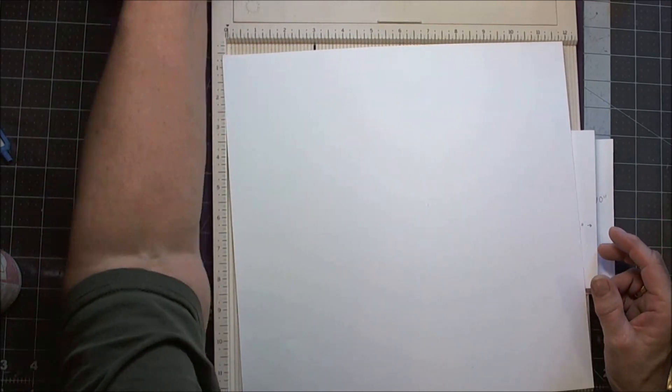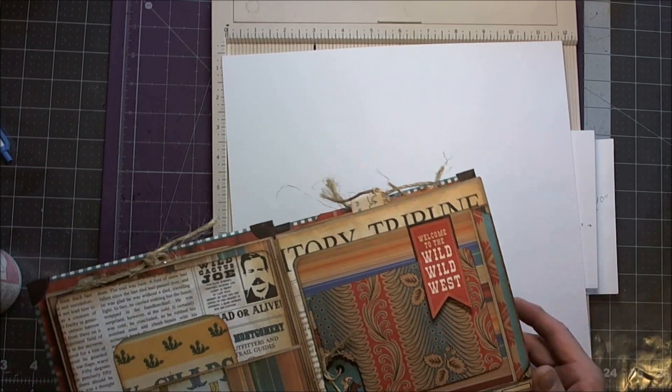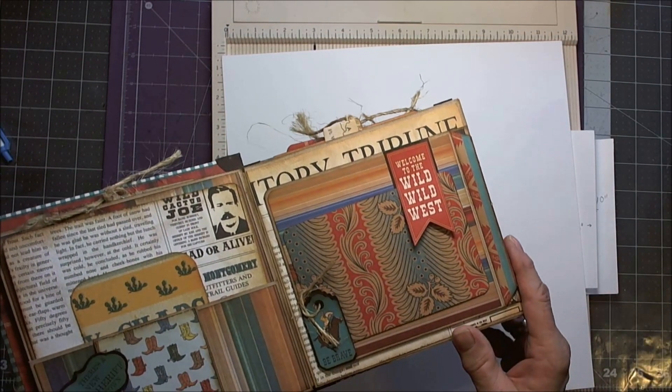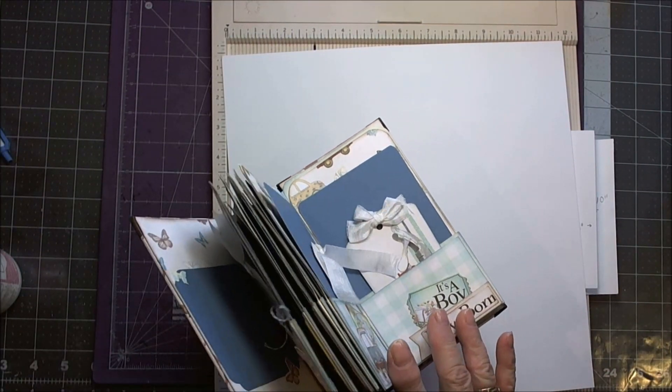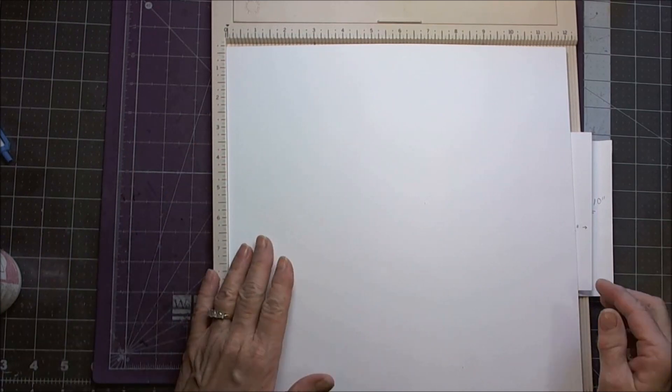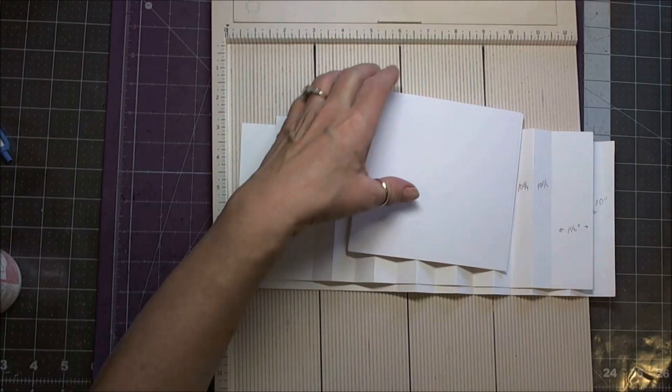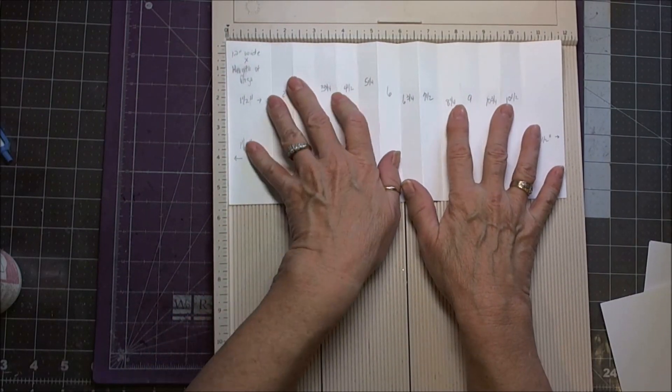So you want 12 inches wide and you're going to cut it the height of whatever your page is. Now on these ones, I think these were six by six. The books I'm doing are going to be five and a half inch square pages. These were even smaller, these were like three and a half. So you can do whatever floats your boat. Your height is your decision. So I'm going to do five and a half by twelve.